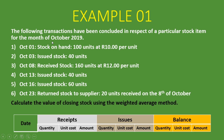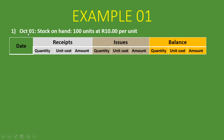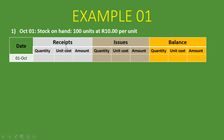Let's start with the 1st of October. We are told that stock on hand was 100 units at 10 Rand per unit. We record the date, 1st of October, and write the balance under receipts. Then we put the balance at the end: 100 units at 10 Rand per unit, giving a total amount of 1,000 Rand. That is the total cost of the inventory we currently have in stock.